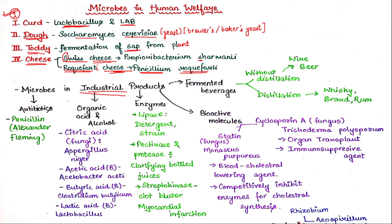Now we are talking about industrial products. Number one is Antibiotics — Penicillin. Who discovered Penicillin? Alexander Fleming discovered Penicillin.